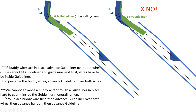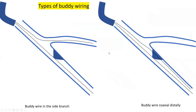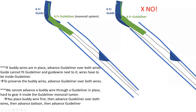Guideliner over body wire — that's my basic support. I use it frequently nowadays in radial cases. If you have a guideliner in place and want to add a body wire, you cannot advance a body wire while the guideliner is already in place. So if you want to have a body wire on top of a guideliner, you have to take the guideliner out, rewire the lesion with another body wire, then re-advance the guideliner over both wires.